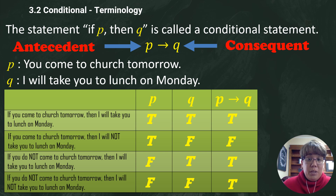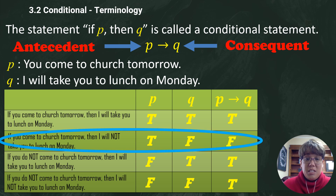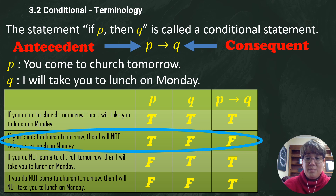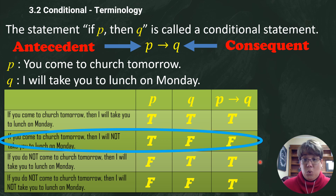The only time p → q is false is when the antecedent is true and the consequent is false. This is going to be another truth table we use as a reference, just like our AND and OR charts. We're going to need to have this one as a reference as well for 'if p then q.'